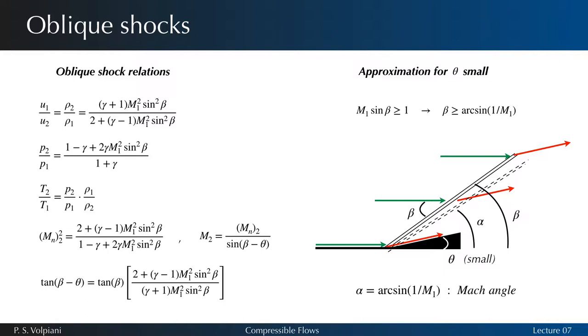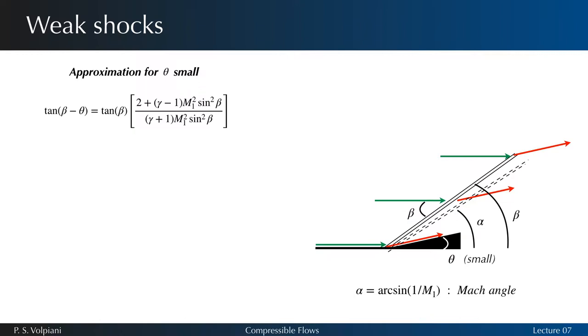But we saw in the third lecture that arc sinus 1 over M1 equals the Mach angle alpha. We seek to establish a relation between theta, beta and M1 in the case of an extremely weak shock with theta very small and beta approaching alpha.